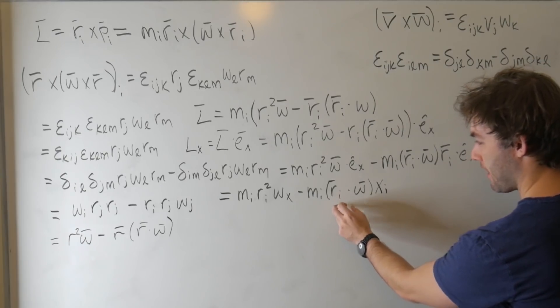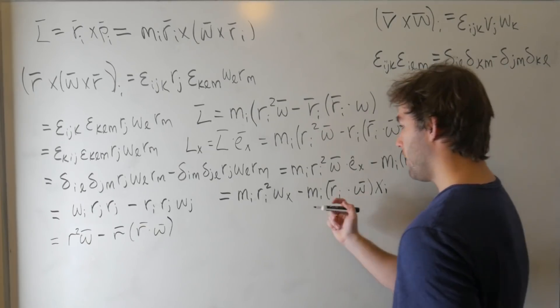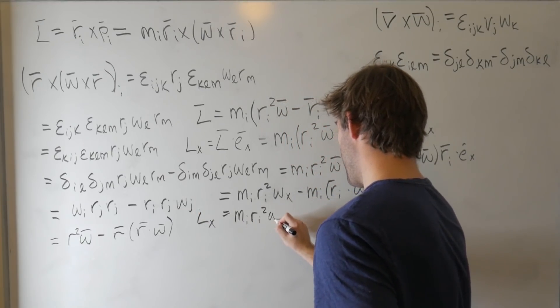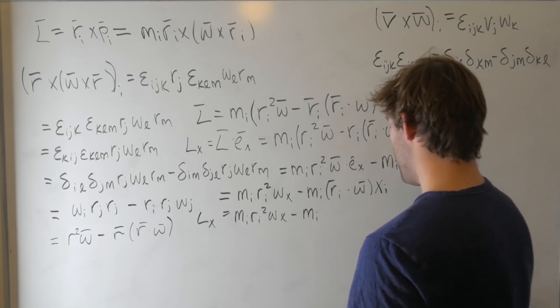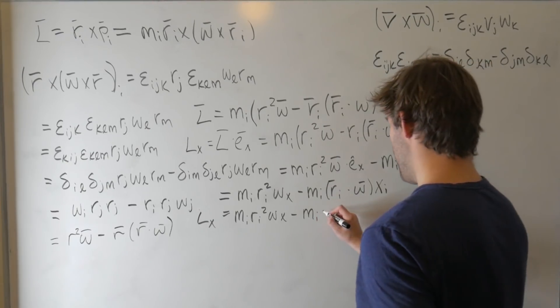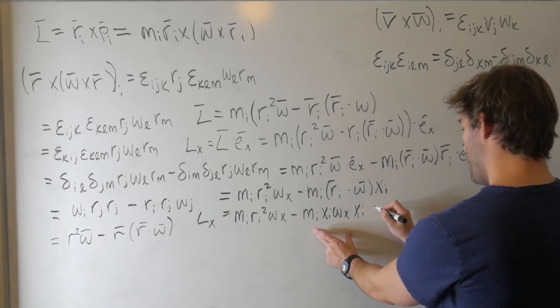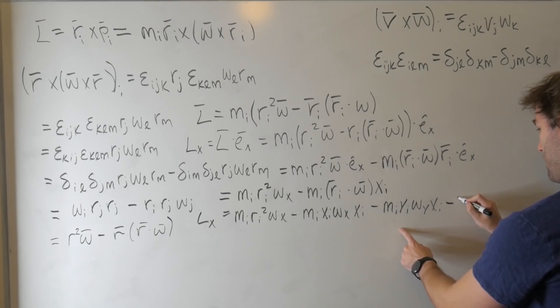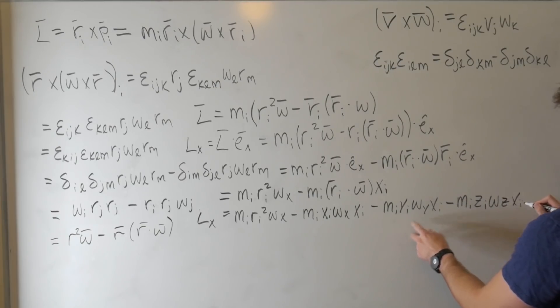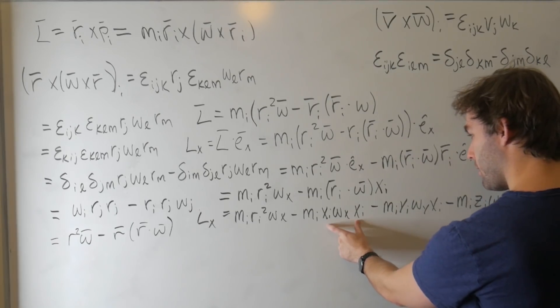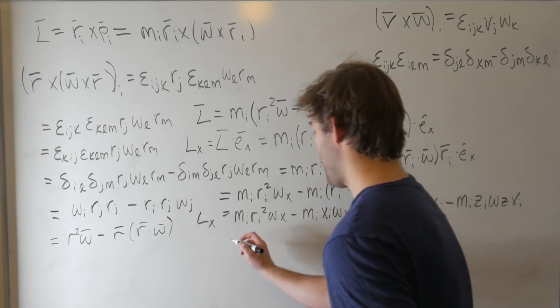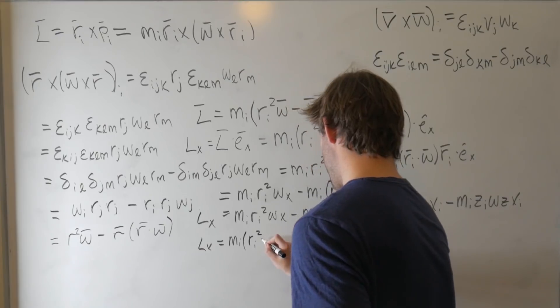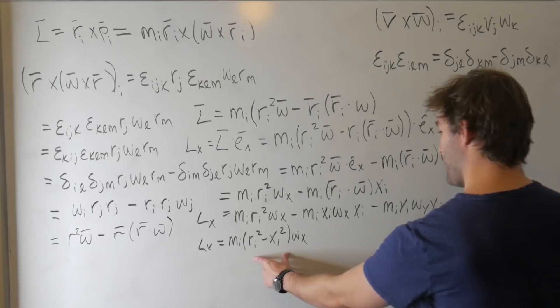Last but not least, we can distribute this dot product out. So we're going to take the components of r and the components of omega and multiply them out. So we get that L_x is equal to m_i r_i squared omega_x minus m_i, the first component is going to be just x_i. This is going to be omega_x, so x_i omega_x x_i minus m_i y_i omega_y x_i minus m_i z_i omega_z x_i. Well right here we have a common factor of m_i and omega_x. So we can factor that out and we get that L_x is equal to m_i times r_i squared minus x_i squared times omega_x.